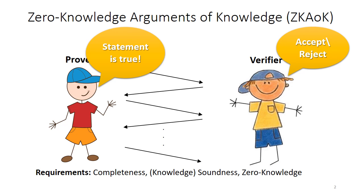First of all, it must be complete. Second, it must have knowledge soundness. And third, it must provide the zero-knowledge property. Completeness means that if the statement is true and the prover has a witness for it, then the prover will always be able to convince the verifier about the truth of the statement, and the verifier will always accept at the end of the protocol.